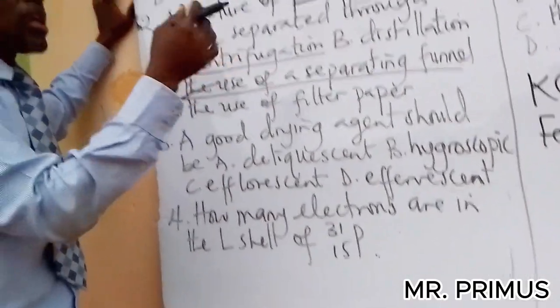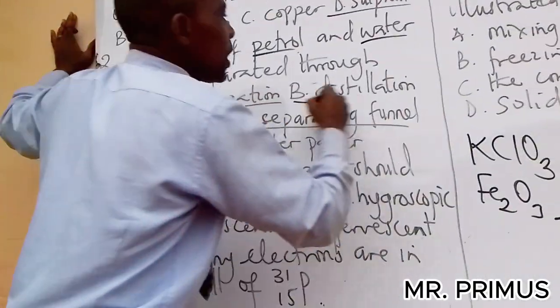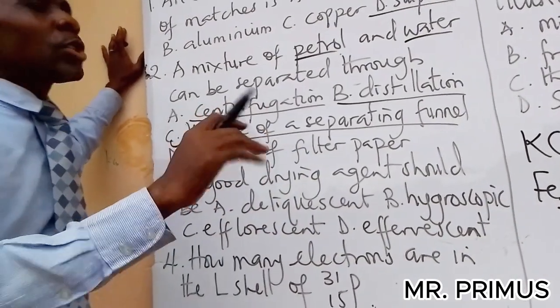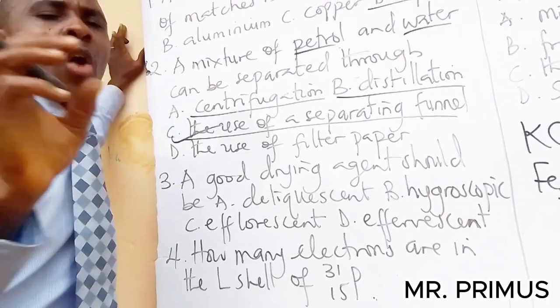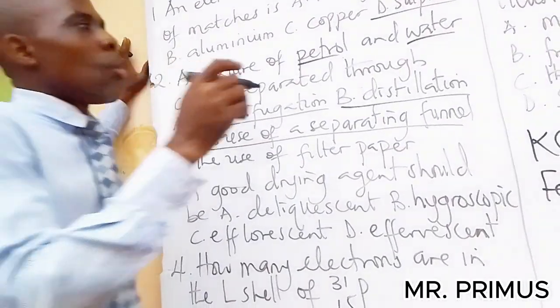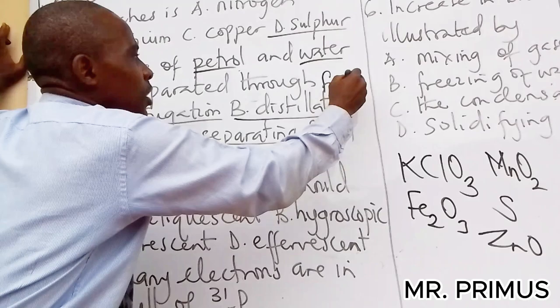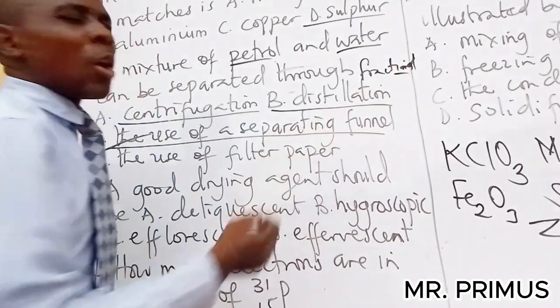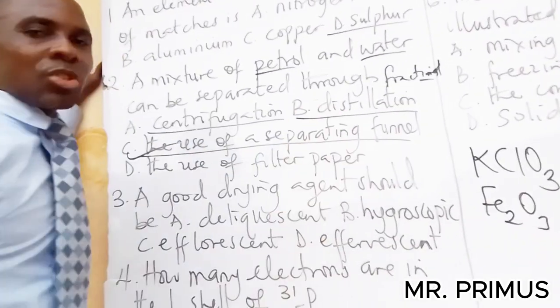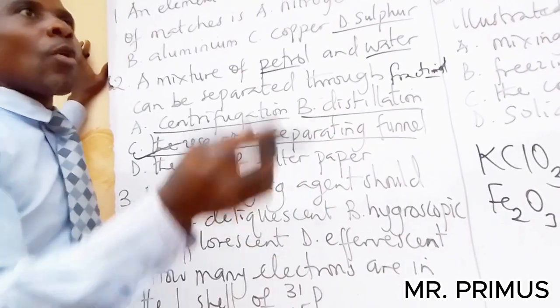Centrifugation is used in separating particles in blood. The answer to this is separating funnel to separate particles in blood. Distillation is used in separating two miscible liquids, that is two liquids that can mix. But if they are of close boiling points, we use what we call fractional distillation.